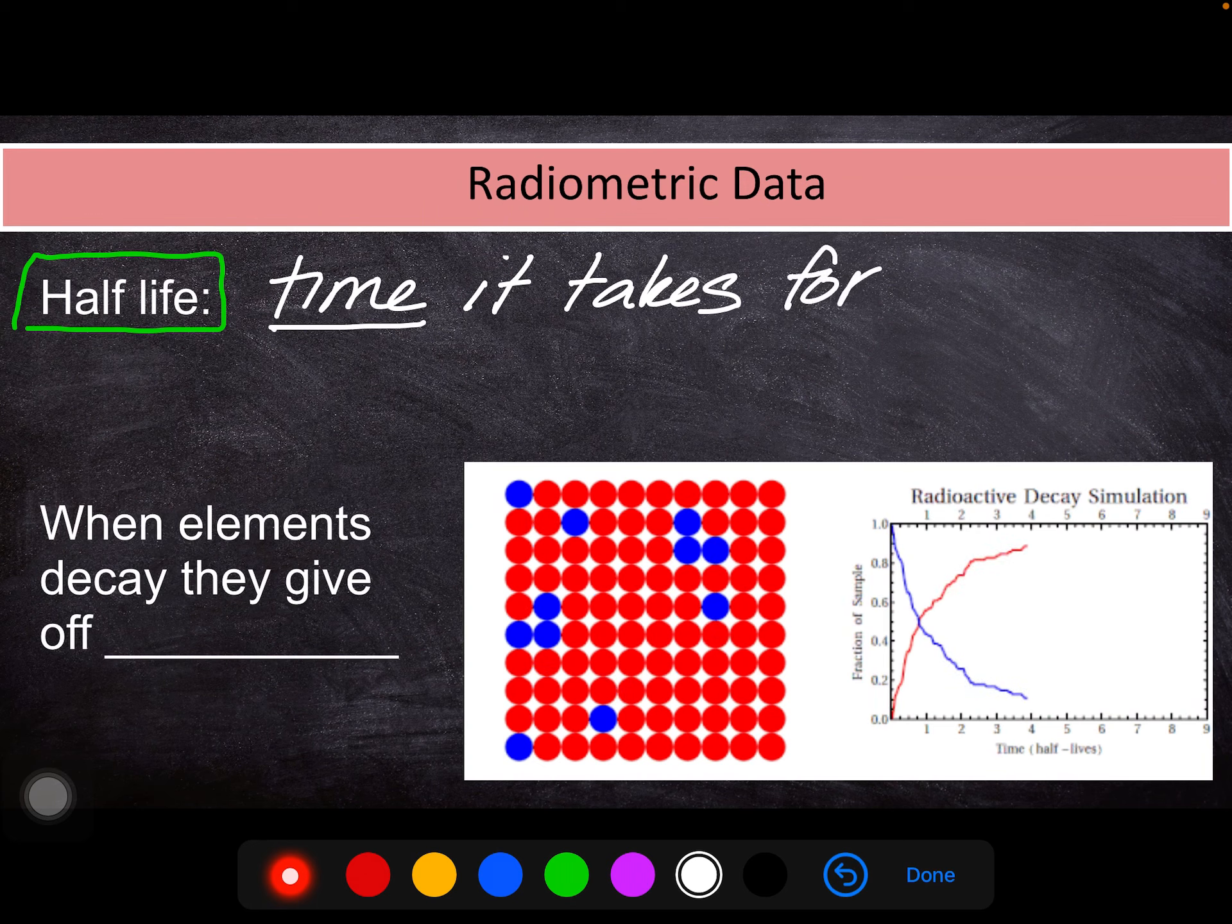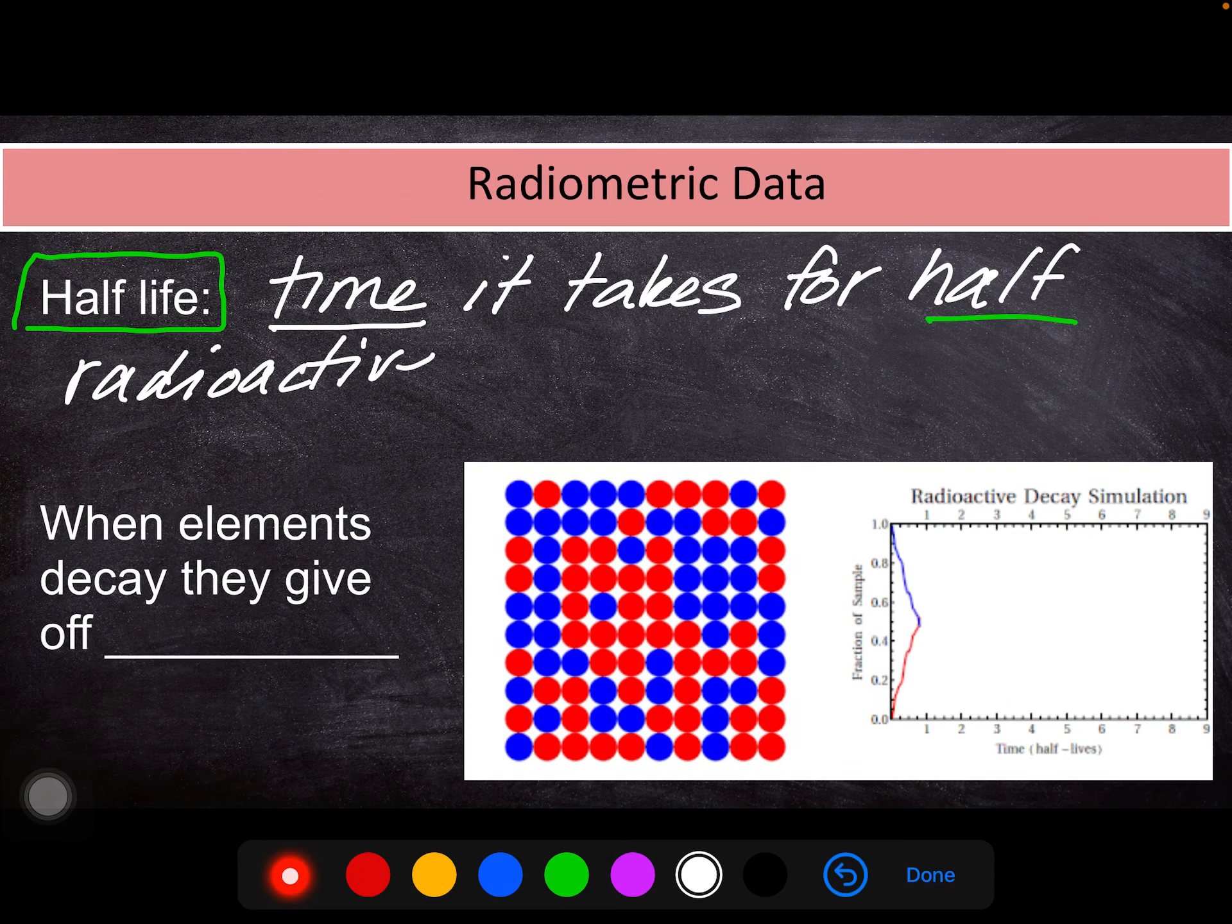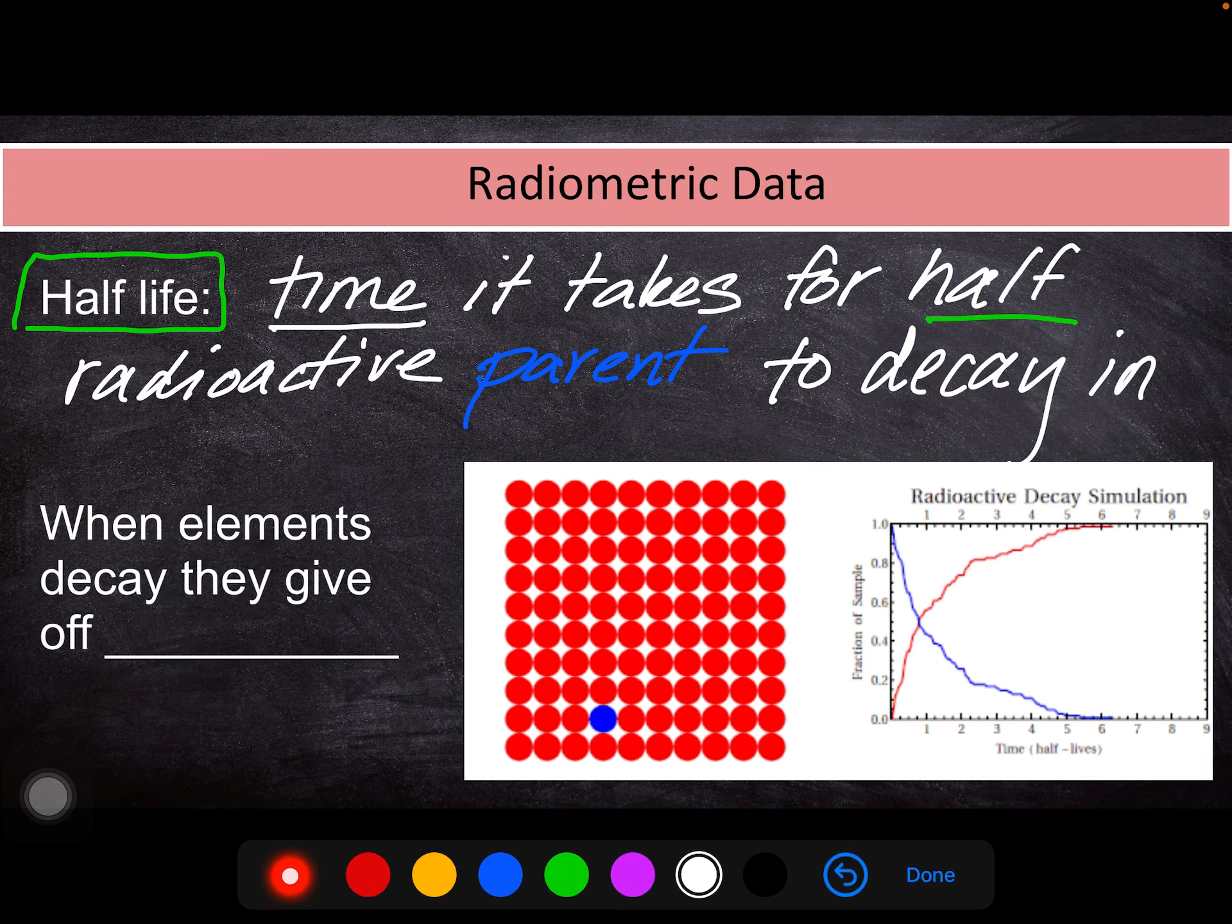But the time it takes for half—that's our key word here, our key reminder—the time it takes for half of the radioactive parent substance to decay into the stable daughter substance.